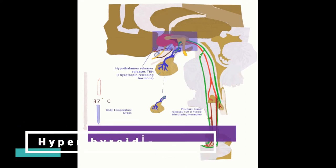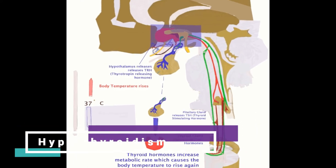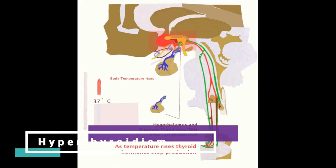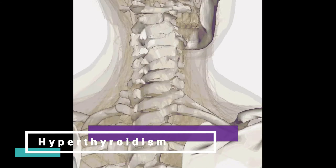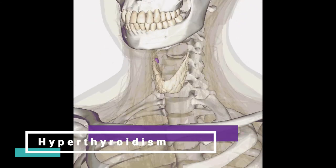Hyperthyroidism happens when there's too much thyroid hormone in your body. This condition is also called thyrotoxicosis. An overactive or enlarged thyroid gland may produce more thyroid hormone.